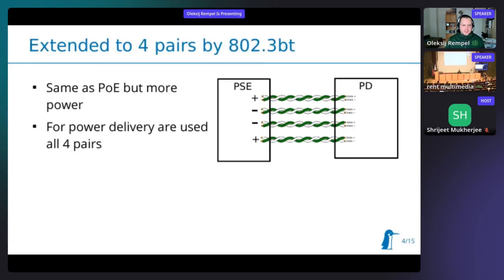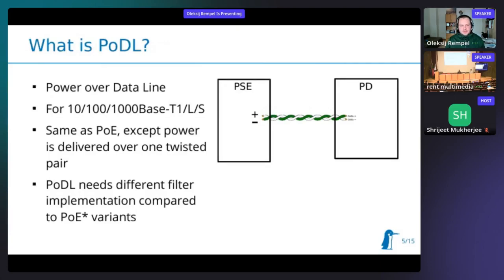The main difference between these two variants is that for Power over Ethernet, each twisted pair carries one direction of power — one twisted pair is plus, the other is minus. For Power over Data Line we have only one twisted pair, so within that single pair we have both plus and minus. This introduced extra challenges, requiring additional hardware to split the power and data stream on a pair basis.